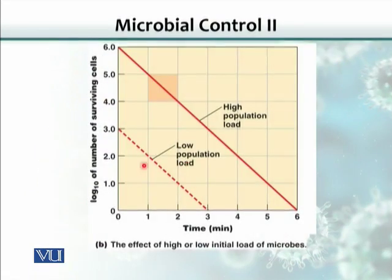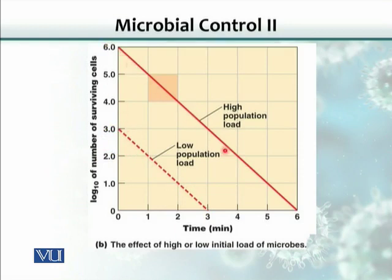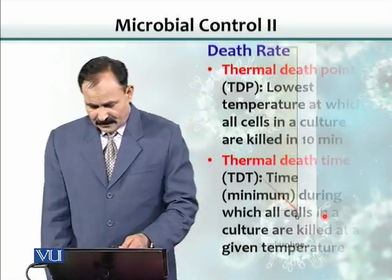As mentioned, if there are more bacteria in a sample, it requires more time. As an experimental proof: if the initial number was log three, there is a 90% reduction in one minute, and in three minutes those organisms would be eliminated. But if the number is doubled, you would need double the time. Given the same environment, same pH, same concentration, and same intensity of heat — if the organism number is greater, it requires more time.